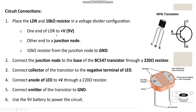Place the LDR and 10 kilohm resistor in a voltage divider configuration: one end of the LDR to the positive 9-volt battery, another end at the junction node, and the 10 kilohm resistor from the junction node to ground. Connect the junction node to the base of the BC547 transistor through a 220 ohm resistor. Connect the collector of the transistor to the negative terminal of the LED, and the anode of the LED to the positive voltage through a 220 ohm resistor. Connect the emitter of the transistor to ground.